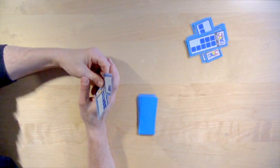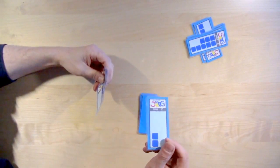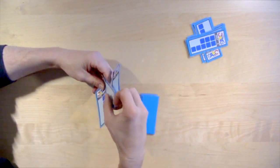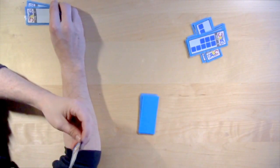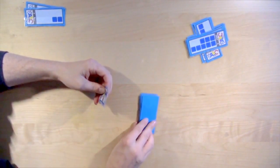Do you have a 2? Go fish. Take a card. Oh! I got what I asked for. A 2. So I get to go again here. Elliot, do you have a 5? Go fish.